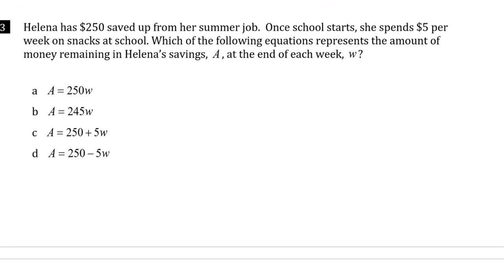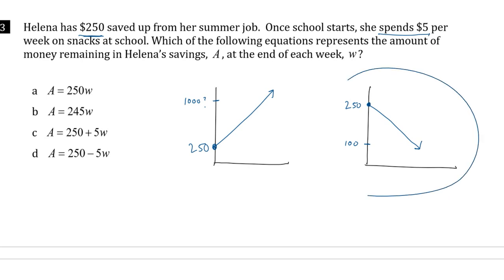Helena has $250 saved up from her summer job. Once school starts, she spends $5 per week on snacks at school. Which of the following equations represents the amount of money remaining in Helena's savings? Before I even do that, I'm going to think about this. Is Helena starting at $250 and the amount of money is increasing, so eventually she'll be at like $1,000 or something like that? Or is she starting at $250 and the amount of money is decreasing, so that at some point she'll be at $100 or something like that? She's got $250 saved up from her summer job and she's spending $5. That means it's this graph. She's losing money.